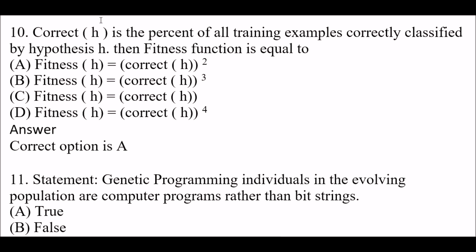Fitness function equals — Option A: fitness(h) = correct(h)^2. Option B: fitness(h) = correct(h)^3. Option C: fitness(h) = correct(h)^4. Right answer is Option A — fitness(h) = correct(h)^2.